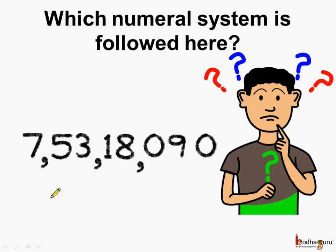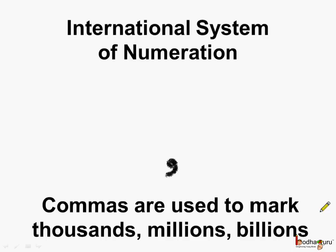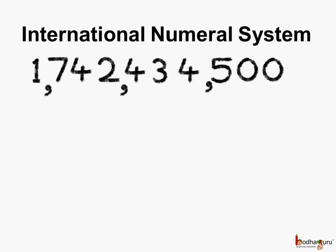Can you tell just by looking at the number which numeral system is followed here? If you remember, in the international system of numeration, commas are used to mark thousands, millions, billions, etc. This number is following the international numeral system. Let us see how.